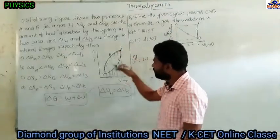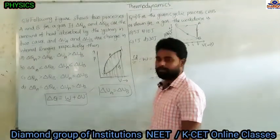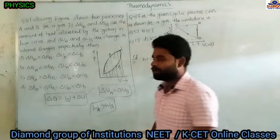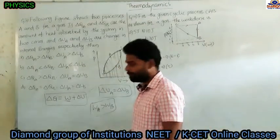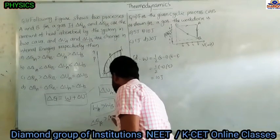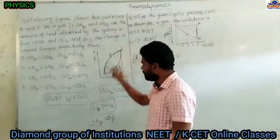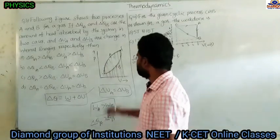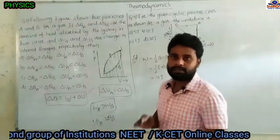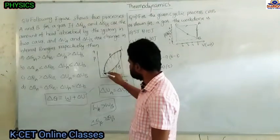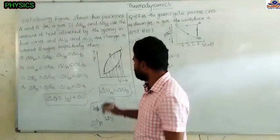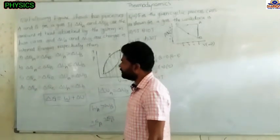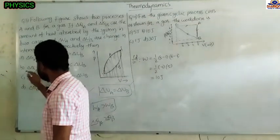Internal energy is path independent — it depends only on the initial and final points. Processes A and B have the same initial and final points, so ΔUA = ΔUB. The area under the PV graph gives work done. The area covered by curve A is greater than by curve B, so work done by A is more, meaning QA > QB. Option C is the right answer.